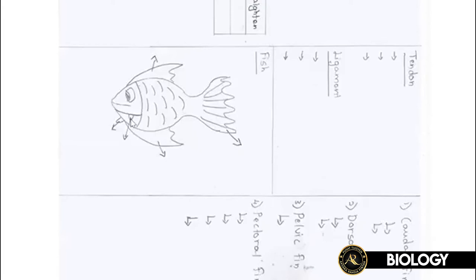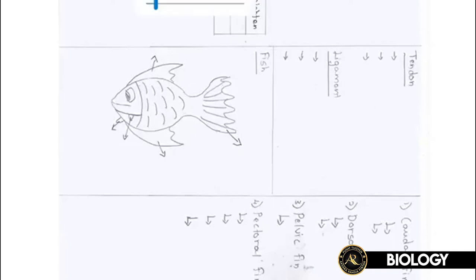To recap: the caudal fin provides forward thrust by flipping left and right. The dorsal and ventral fin prevent yawing — which is side-to-side drift — and prevent rolling, which is a 360-degree rotation. The pelvic fin prevents pitching, which is the movement of an object towards a lower pressured area. The pectoral fin has three functions: providing additional forward thrust to escape danger, helping the fish turn left and right, and helping the fish swim backwards.